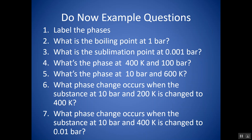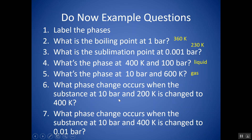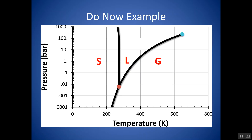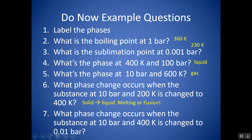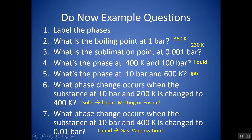What's the phase at 10 bar and 600 K? At 600 K and 10 bar, we're in the gas phase. What phase change occurs when the substance at 10 bar and 200 K is changed to 400 K? The pressure stays at 10 bar, but temperature changes from 200 to 400 K — going from solid to liquid, so that's melting or fusion. What phase change occurs when the substance at 10 bar and 400 K is changed to 0.01 bar? The temperature stays at 400 K, but pressure changes from 10 to 0.01 bar — crossing from liquid into gas, which is vaporization.